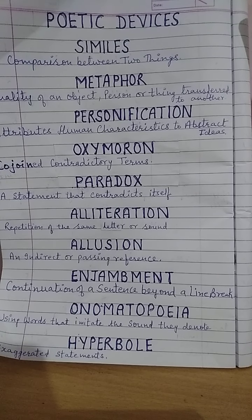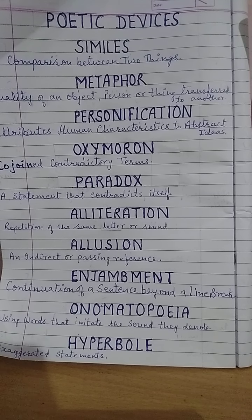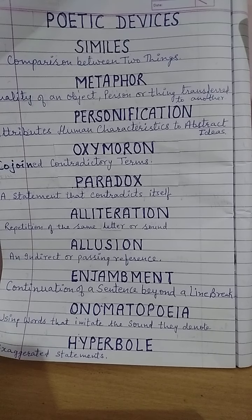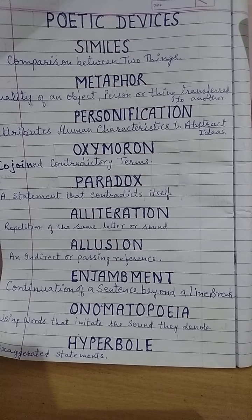Next is paradox. Paradox is a statement that contradicts itself. For example, 'This is the beginning of the end' — it has both beginning and end, contradicting itself. Another example is 'Less is more' — less and more are contradictory, yet used in the same statement. So these are examples of paradox.